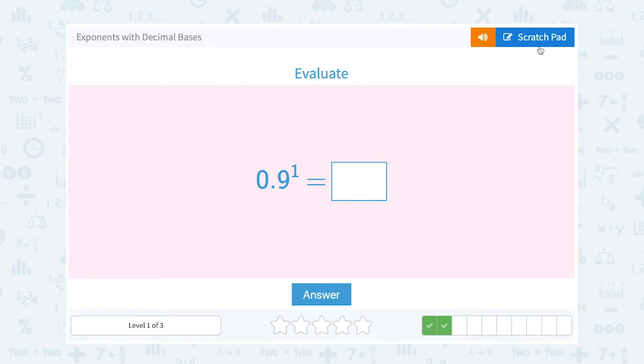0.9 to the first power. Well if I follow my rule for exponents here, this means to write 0.9 out one time. That would just be 0.9.